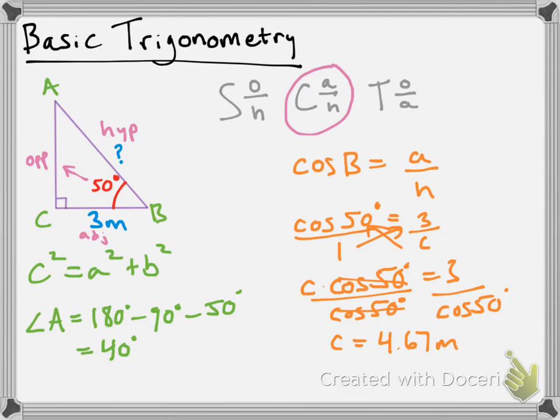If you'd like, you can try to figure out what side length b is on your own. The answer should be 3.58 meters, so go for it and see if you get that.